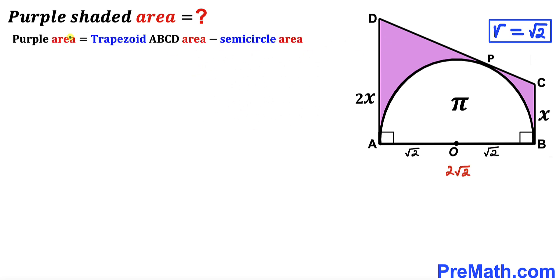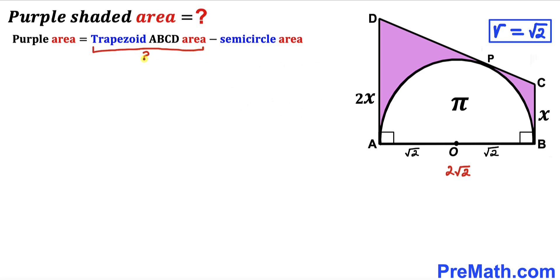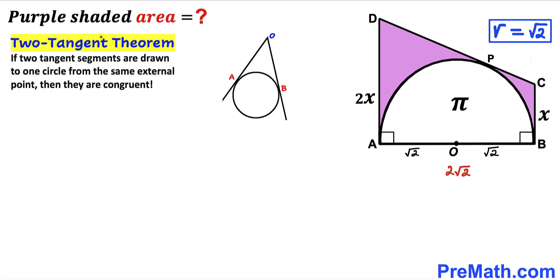Now let's make a key observation: the purple shaded area equals the area of trapezoid ABCD minus the area of the semicircle. Since the semicircle area has been given as π, our task now is to calculate the area of trapezoid ABCD.